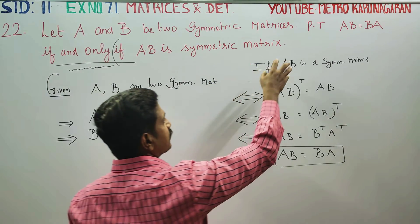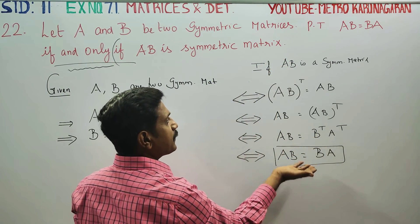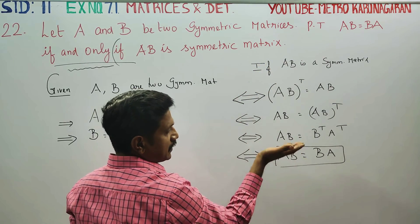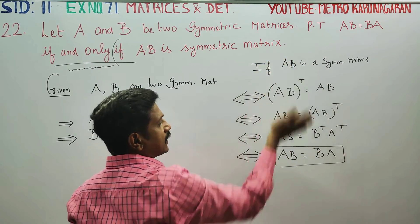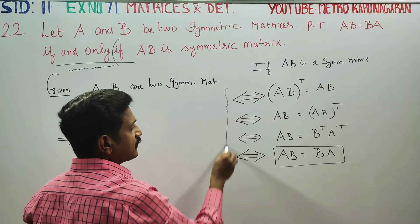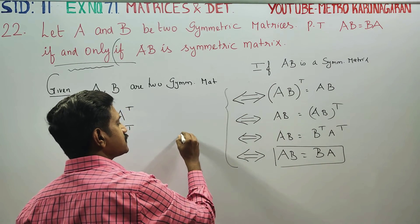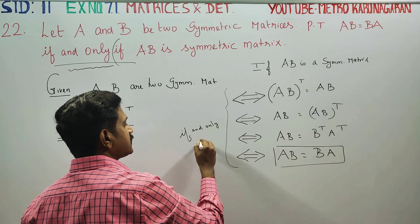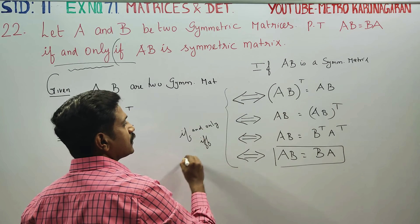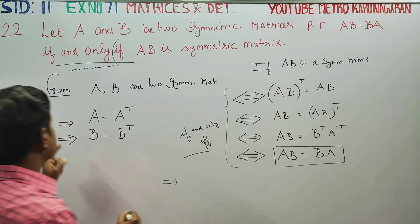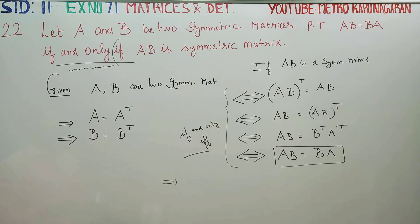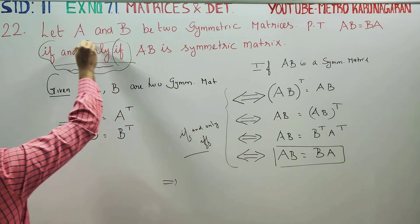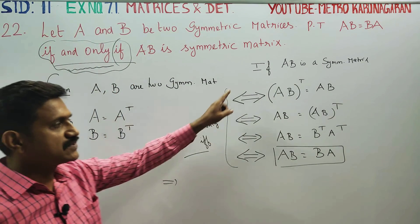If and only if AB is a symmetric matrix. The double-sided arrow has a meaning — if and only if. Both directions of the proof hold, so the biconditional is established.